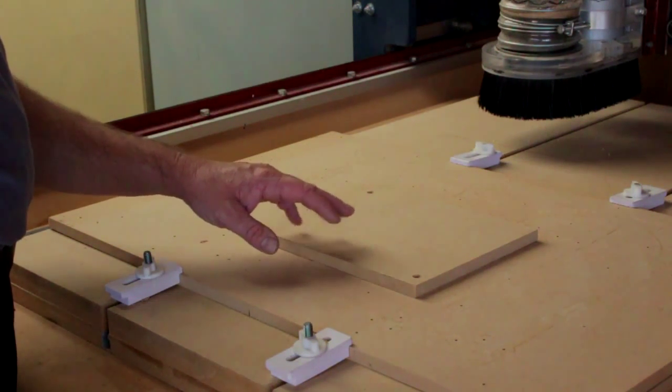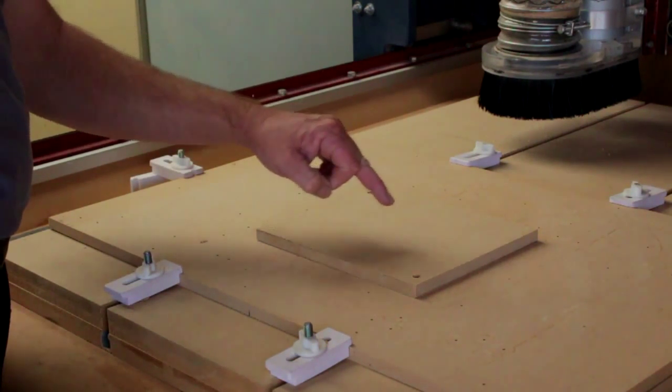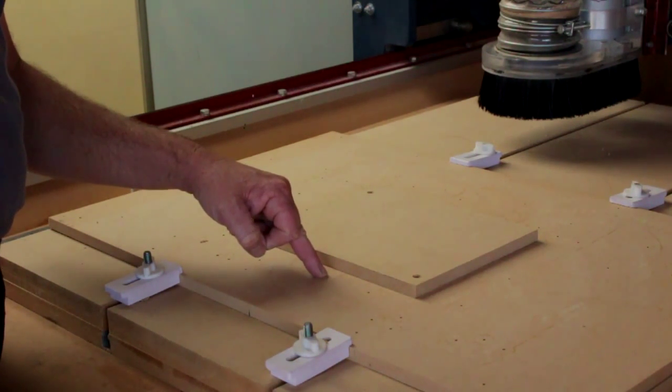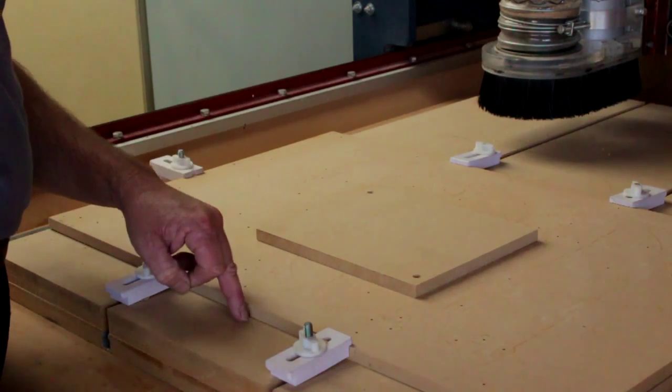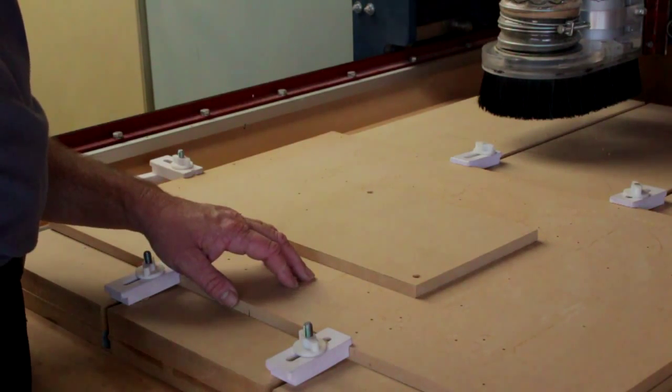The reason for this is at a later stage I'll be drilling a couple of registration holes in the stock right through to my spoil board. I don't want to damage the actual spoil board on my machine, so I put the sacrificial one in.